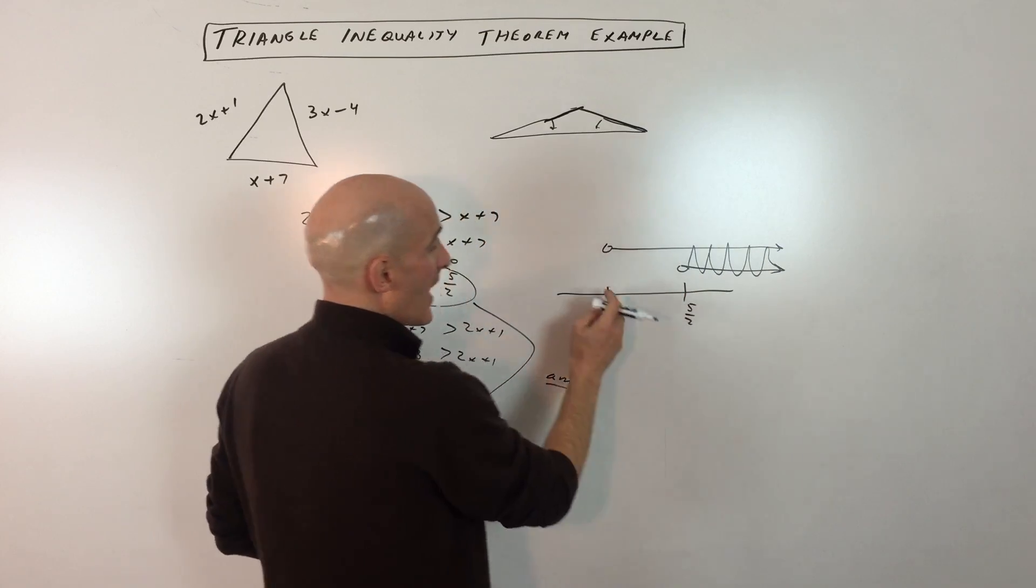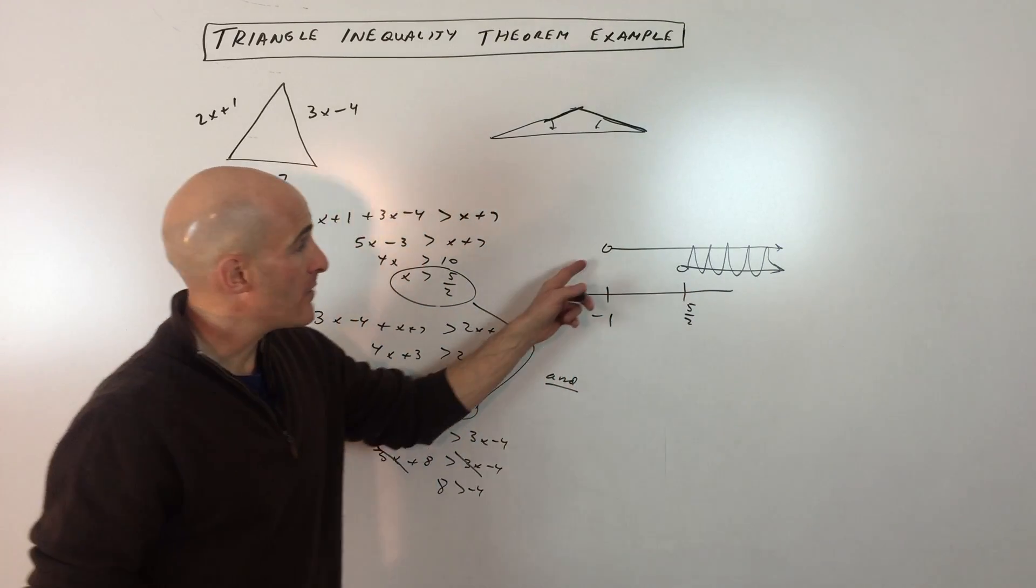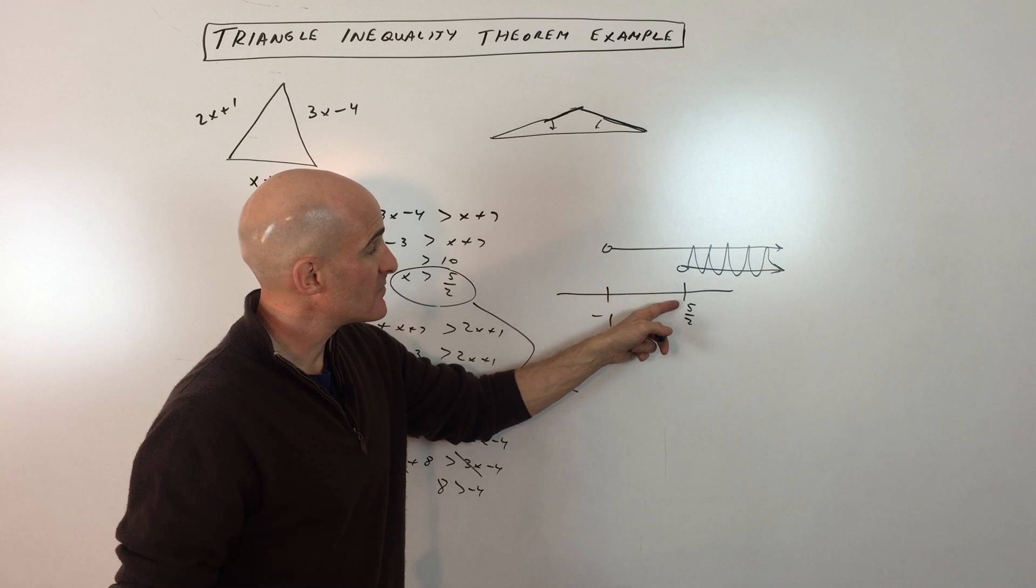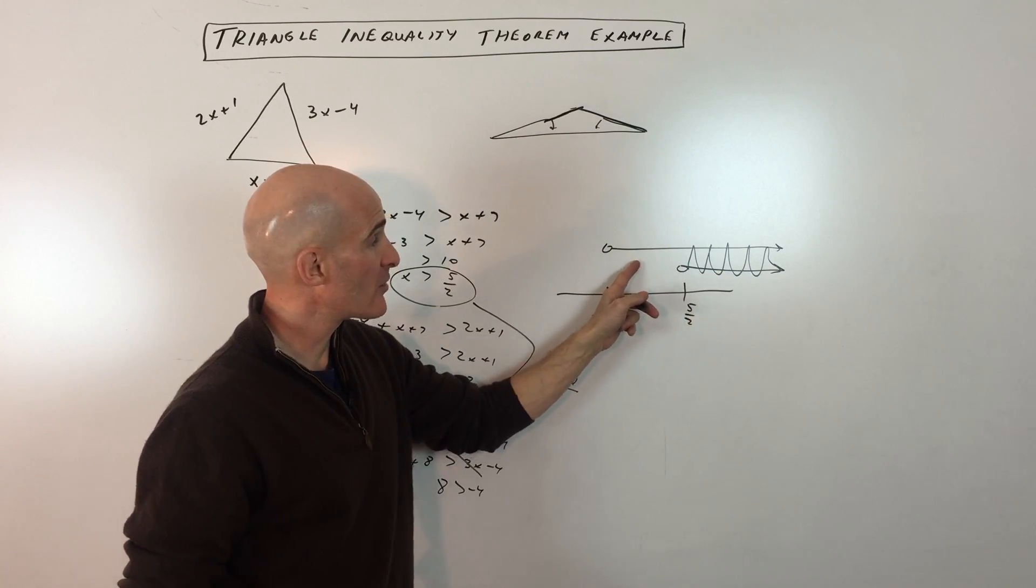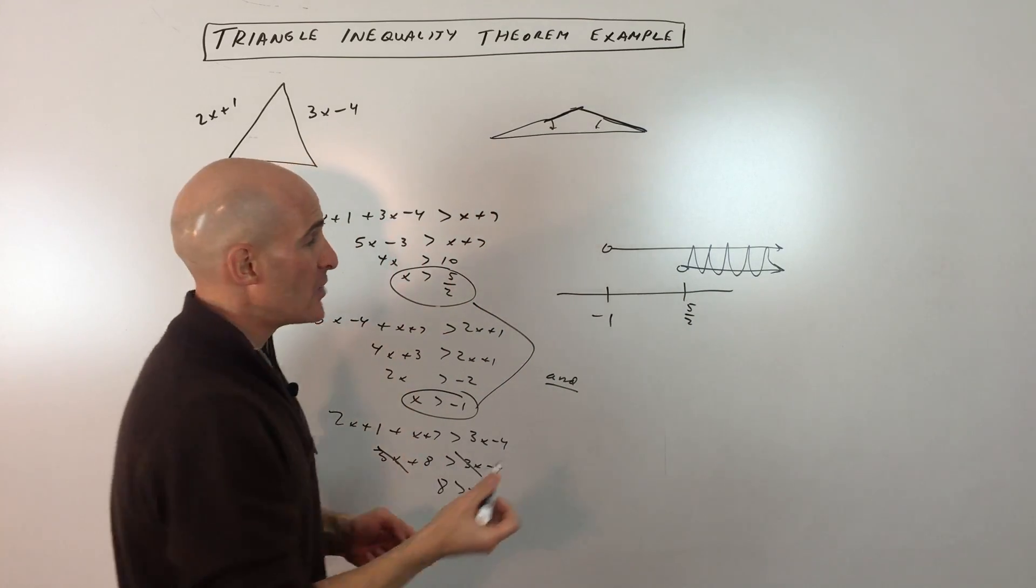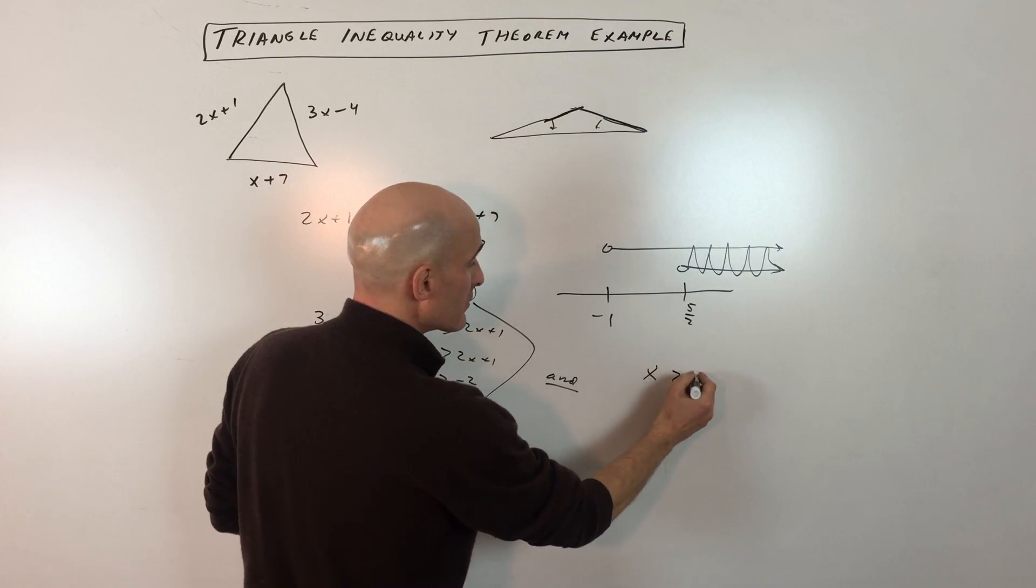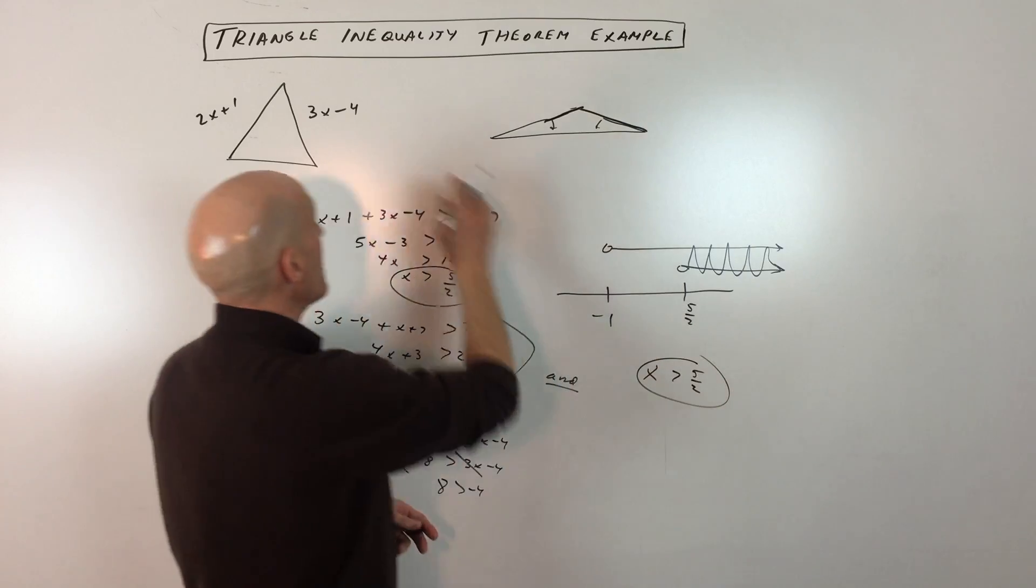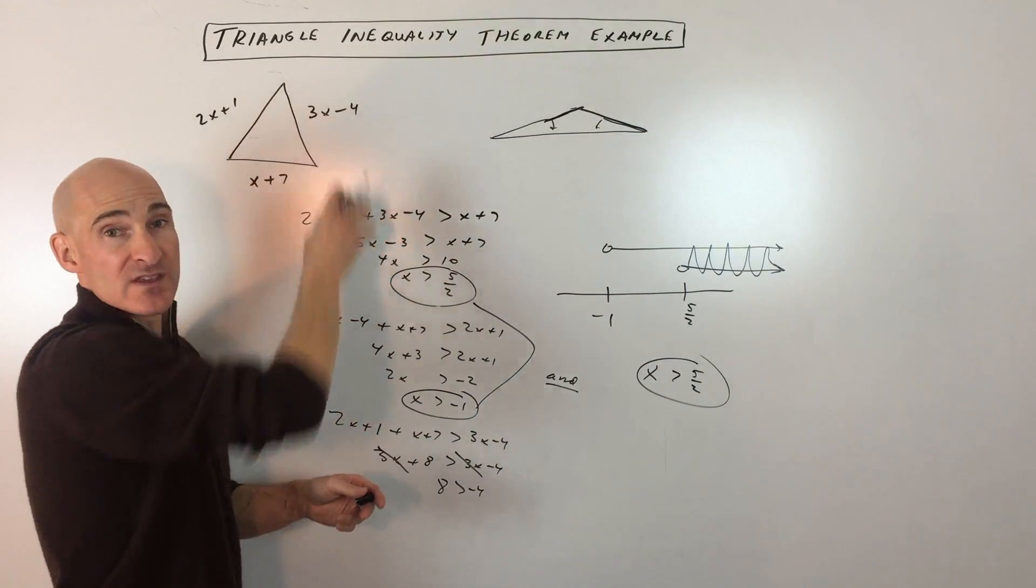As long as you're greater than 5 halves, you will also be greater than negative 1. But just because you're greater than negative 1 doesn't mean you're going to satisfy the requirement of being greater than 5 halves. So we look at where they overlap or intersect, and you can see that as long as x is greater than 5 halves, we're going to be able to form a triangle with these three sides.